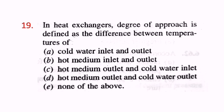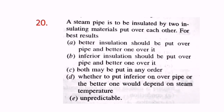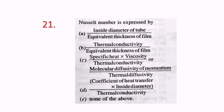Question 19: In heat exchangers, degree of approach is defined as the difference between temperatures of the hot medium outlet and cold water outlet. Question 20: A steam pipe is to be insulated by two insulating materials put over each other — for best results, the better insulation should be put over the pipe and the better one over it. A is the correct answer.